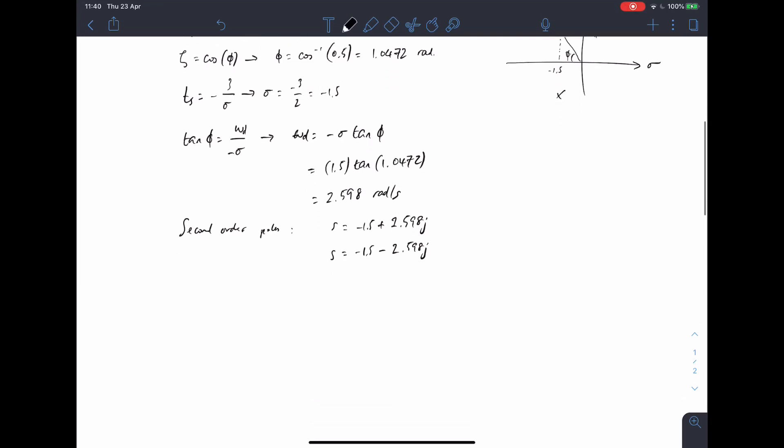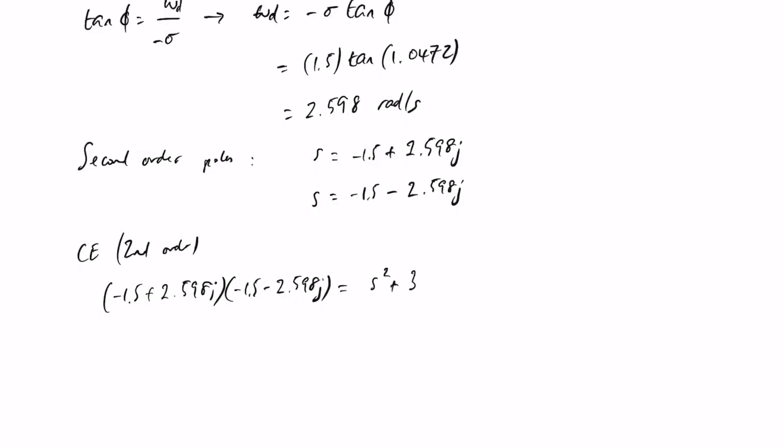So that gives us a characteristic equation, which is second order. So we take minus 1.5 plus 2.598j, multiply by minus 1.5 minus 2.598j. If you do the sums, this comes out to be S squared plus 3S plus 9.